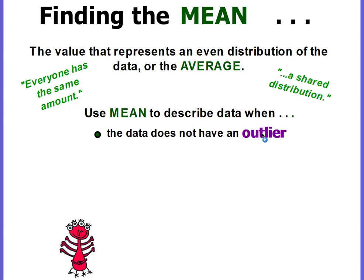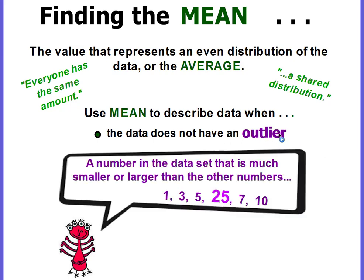What's an outlier? An outlier is a number in the data set that is much smaller or larger than the rest of the numbers. For example, 1, 3, 5, 25, 7, 10 — you can see that 25 is quite a bit larger than the rest of the numbers, so 25 is what we would consider an outlier. Because it's so much larger, or it could be a lot smaller, it will affect the mean. Therefore, if there is an outlier, the mean is not the way we would go.